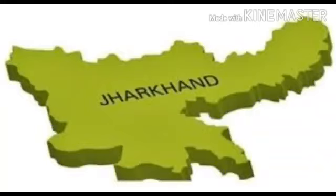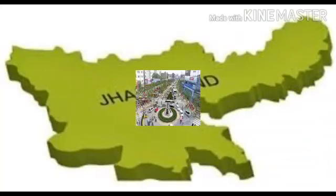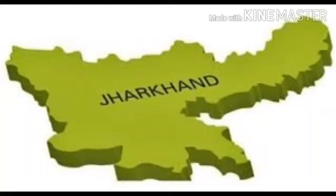The people of Chhattisgarh speak Hindi and some tribal languages. Let's see Jharkhand. Jharkhand was carved out from the state of Bihar. Ranchi is the capital of Jharkhand. This state is rich in minerals and forest resources. Mineral resources include iron ore, copper, aluminum and coal. Other big cities in Jharkhand are Jamshedpur, Bokaro and Dhanbad. Two major steel plants are located at Jamshedpur and Bokaro in Jharkhand.